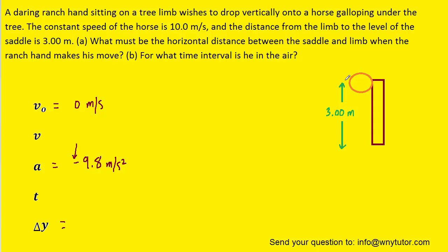The displacement or delta y of the ranch hand is shown in the figure to be 3 meters. However, since he's falling down, we have to make sure that we call that negative 3 meters. And what we're going to do is simply calculate the time using one of the formulas we've learned from kinematics. Now note that because the initial velocity of the ranch hand was stated as being 0, this term right here will be eliminated.